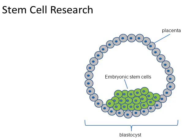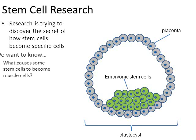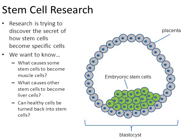Stem cell research is trying to discover the secrets of how embryonic stem cells become specific cells. We want to know what causes some embryonic stem cells to become muscle cells, and what causes others to become liver cells. Can healthy cells be turned backwards into stem cells, and then turned forward into something else of our choosing? These are some of the areas being researched, and while we're still in the early stages, the research is very promising.